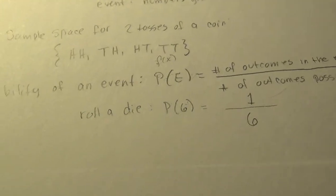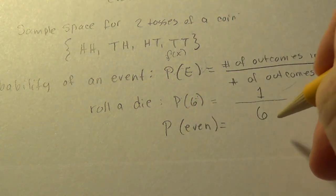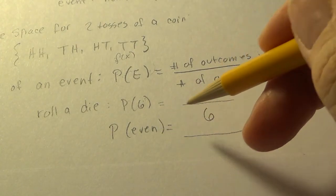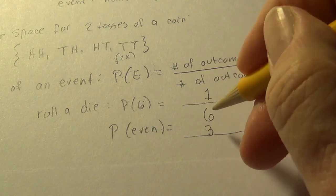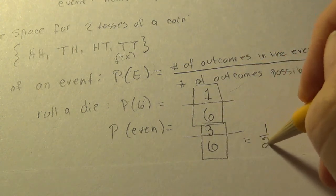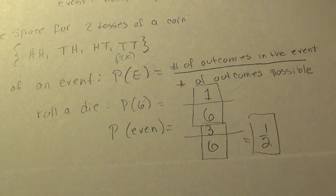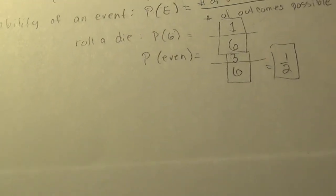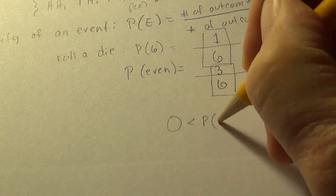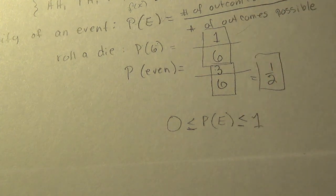What is the probability of rolling an even number on a die? The even numbers are two, four, and six — that's three outcomes out of six possible, giving us three-sixths, which reduces to one-half. Probabilities are always fractions between zero and one inclusive: zero is less than or equal to P(E), which is less than or equal to one.